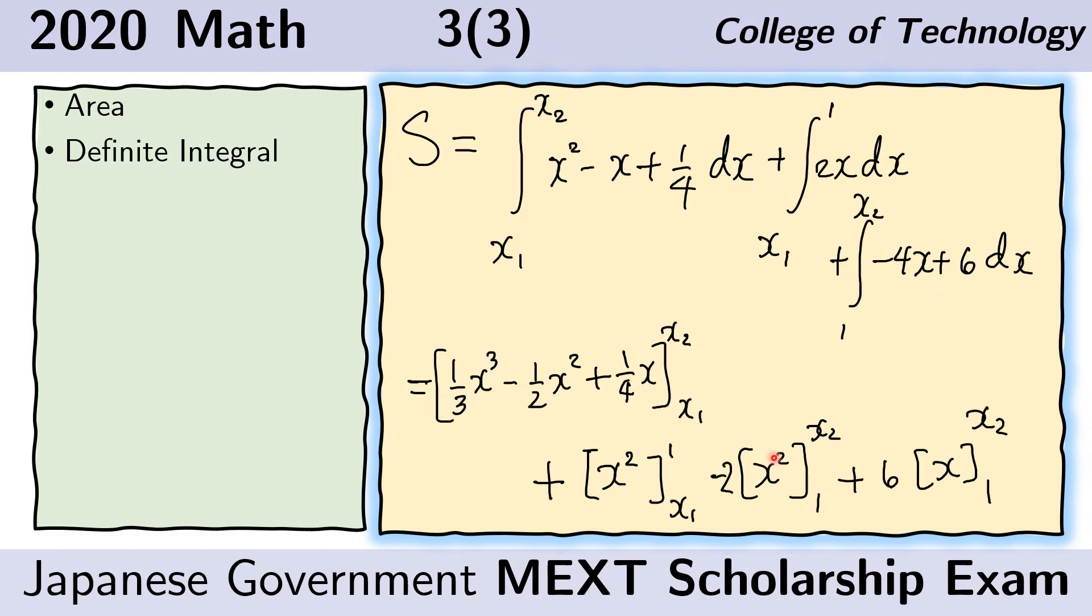And then we just solve the antiderivative of this. We get this. For this, we get this. And for this, we obtain this. Now we just have to replace x2 and x1 with their appropriate values.